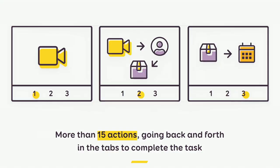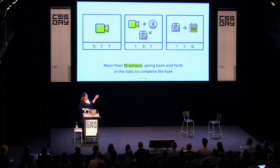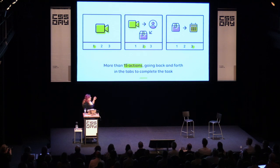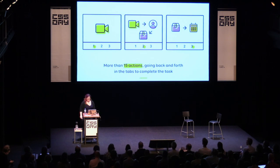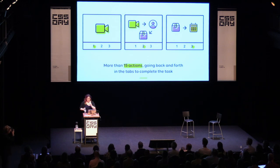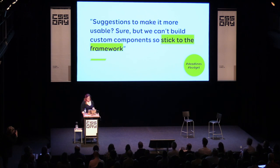Since no one said that aloud during the meeting, this happened. A few days after, they told us: 'This is the prototype we built — now do the design.' They showed us the prototype. The issue was that they used a tab bar navigation, which kind of makes sense for iPad apps at that time, but this didn't make sense for our app. Users needed more than 14 different actions to be able to complete their goal. We kept calm, and asked: 'Can we make some design suggestions to improve the usability?' 'Sure. But we can't build custom components, so stick to the framework.'